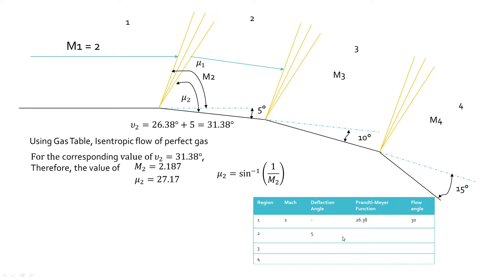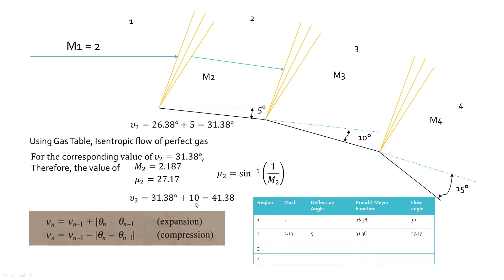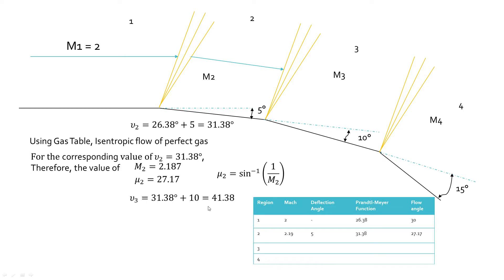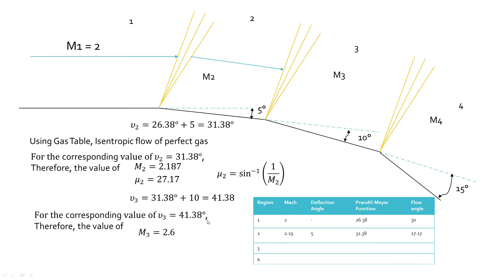Moving to region 3, we again use the Prandtl-Mayer function. Since it is an expansion, we add the deflection angle of 10 degrees. The Prandtl-Mayer function at region 2 plus 10 degrees gives approximately 41.38. Referring to the gas table for isentropic flow of a perfect gas, the corresponding Mach number M3 is approximately 2.6 and the flow angle mu3 is around 22.62.